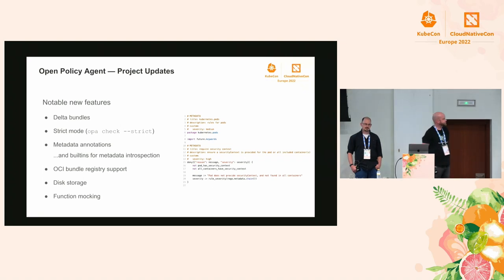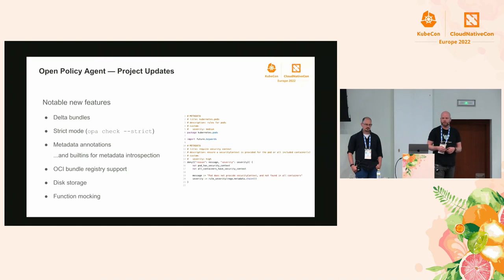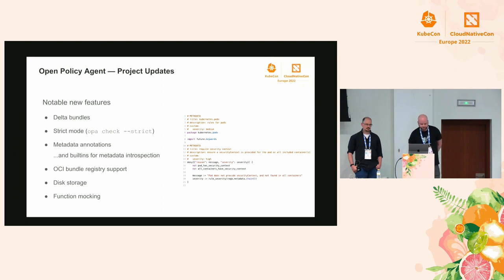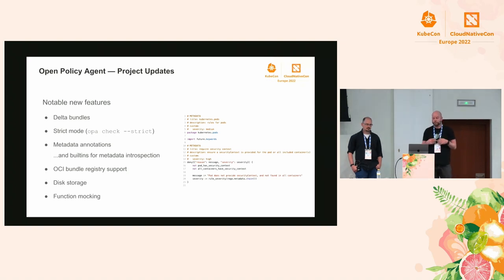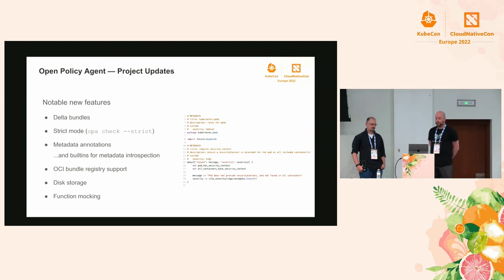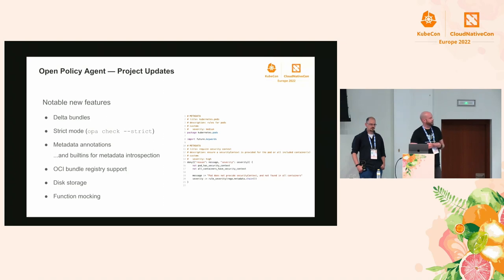There are also metadata annotations, which allow you to annotate your rules and packages. These annotations can be fetched by other tools - you can generate documentation or use annotations from inside rules for things like severity levels. There's new OCI bundle registry support, meaning you can package your policy and data, push it to a registry, and have OPA fetch it. Disk storage is another nice feature if you have more policy or data than can fit in memory. Finally, function mocking has been added to the OPA test framework.